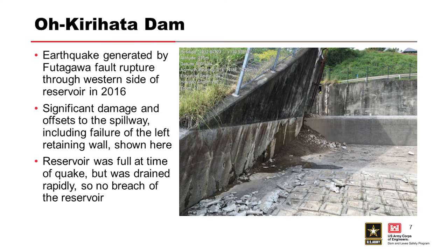A couple of case histories: Okahita Dam in Japan failed during a 2016 earthquake with significant damage and offsets to the spillway, including failure of the left retaining wall. The reservoir was full at the time but was drained rapidly, so there was no breach. The failure of the retaining wall occurred where there was no seepage path to the reservoir, allowing them to drain it in time.